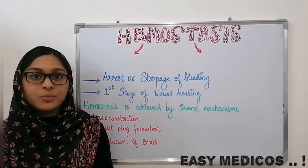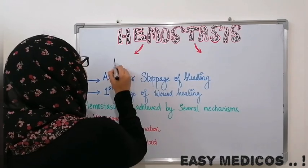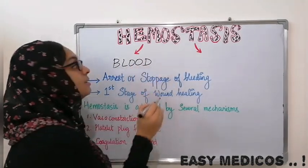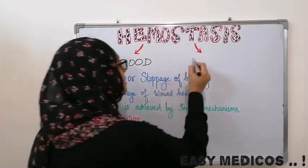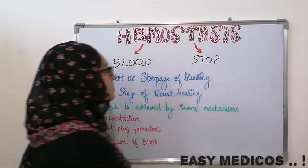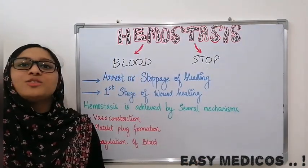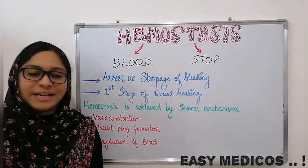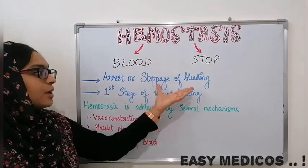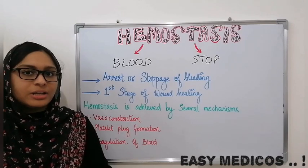Hemostasis is a Greek word where hemo means blood and stasis means to stop or to halt. What is Hemostasis? The arrest or the stoppage of bleeding. Then if you have Hemostasis, stoppage of bleeding.